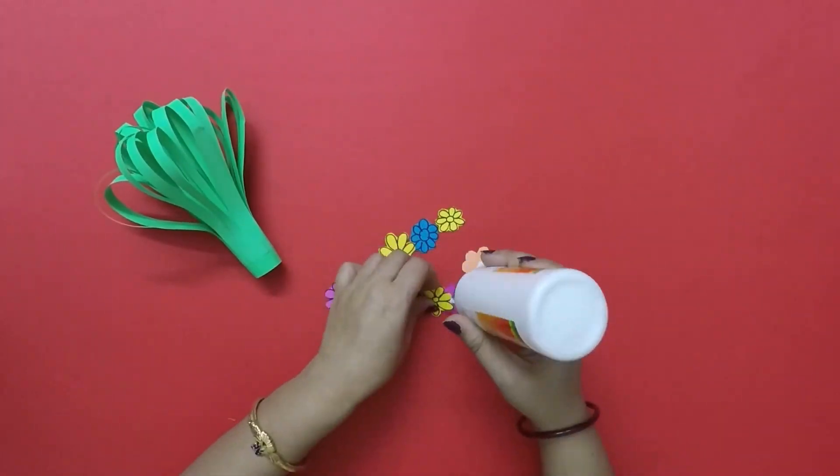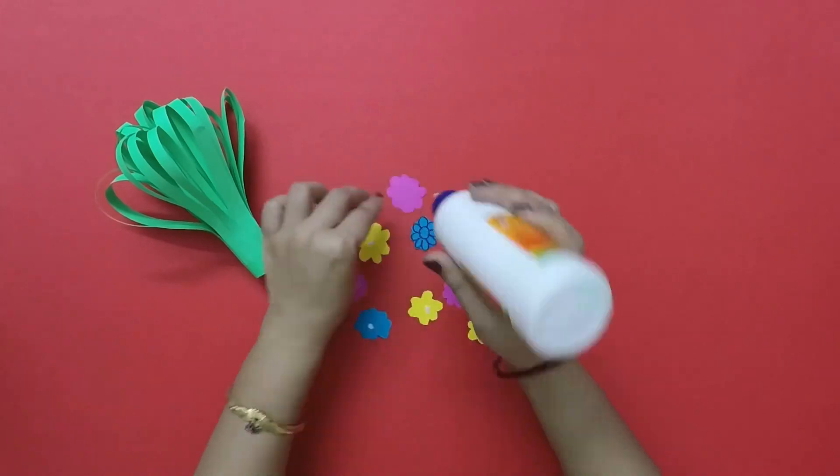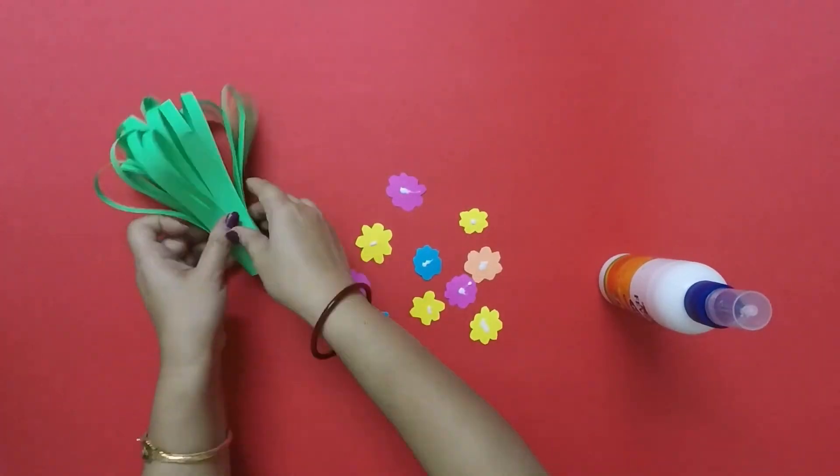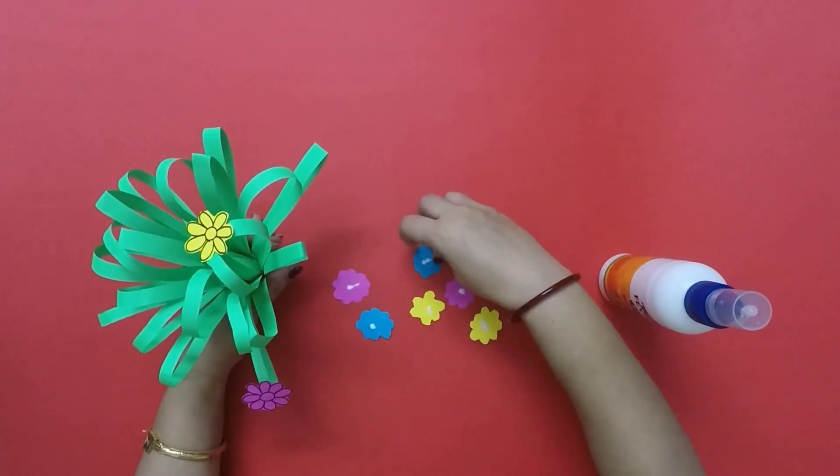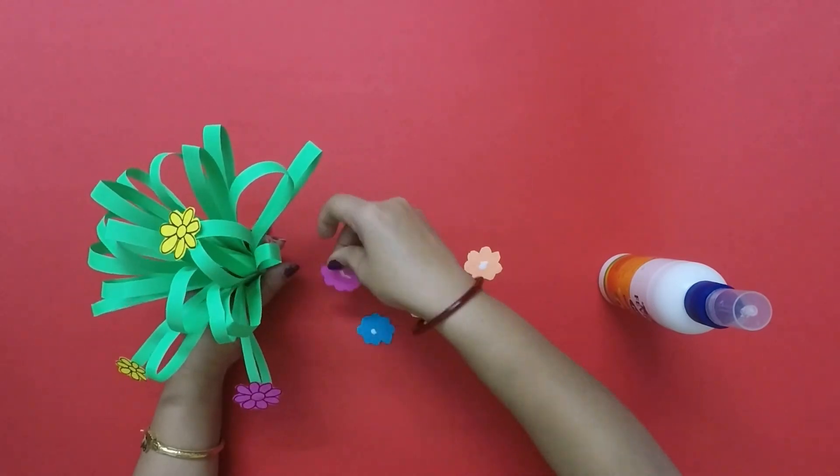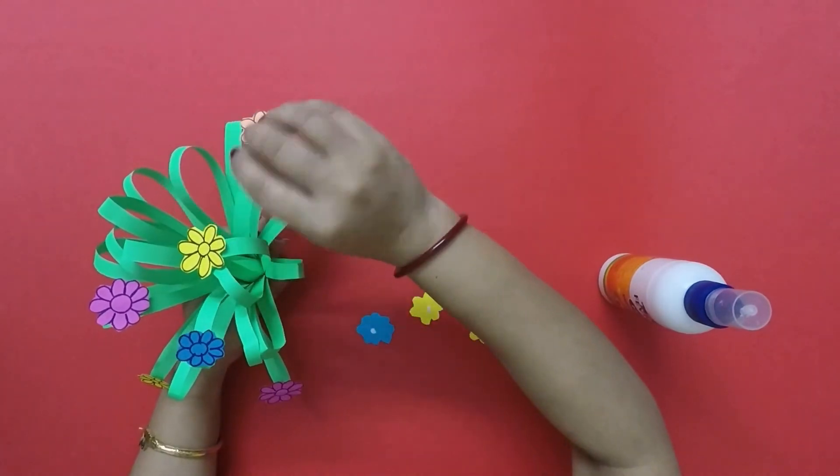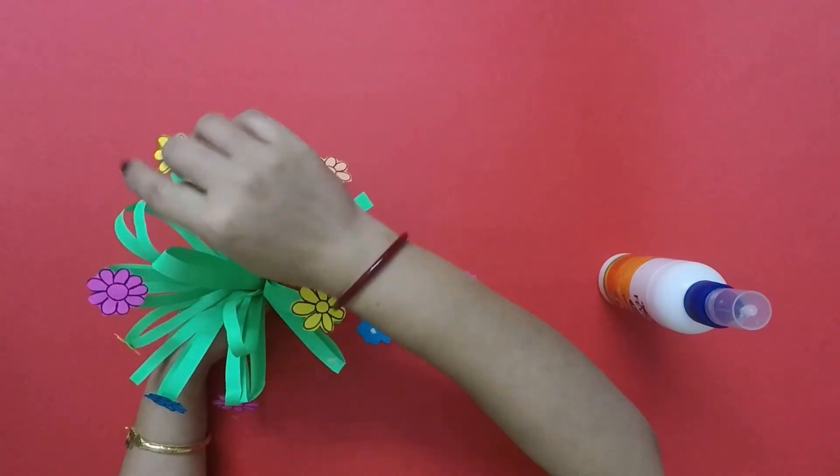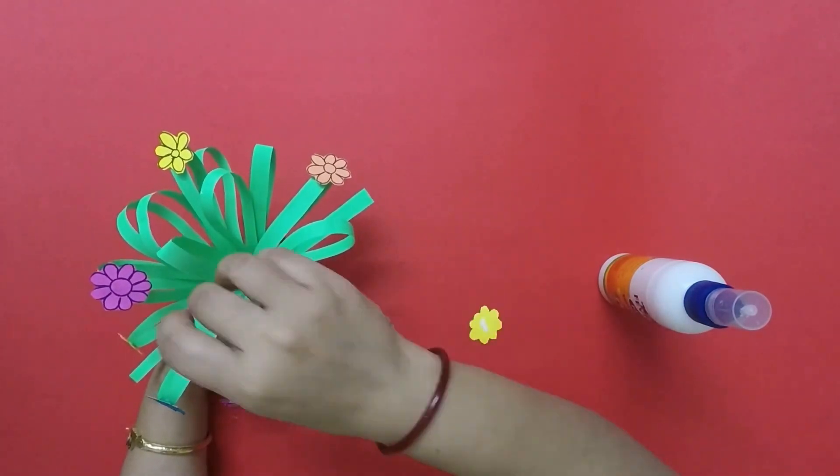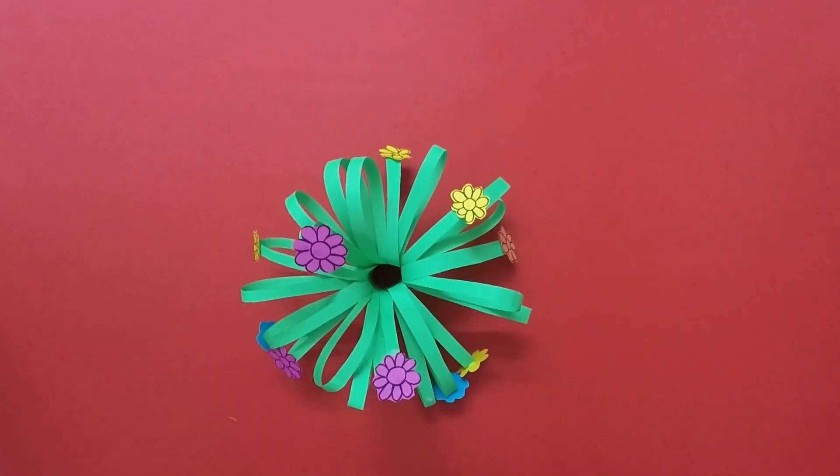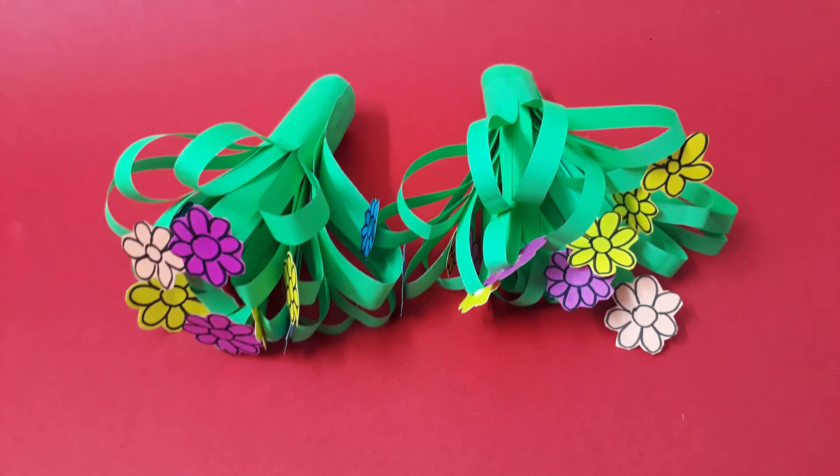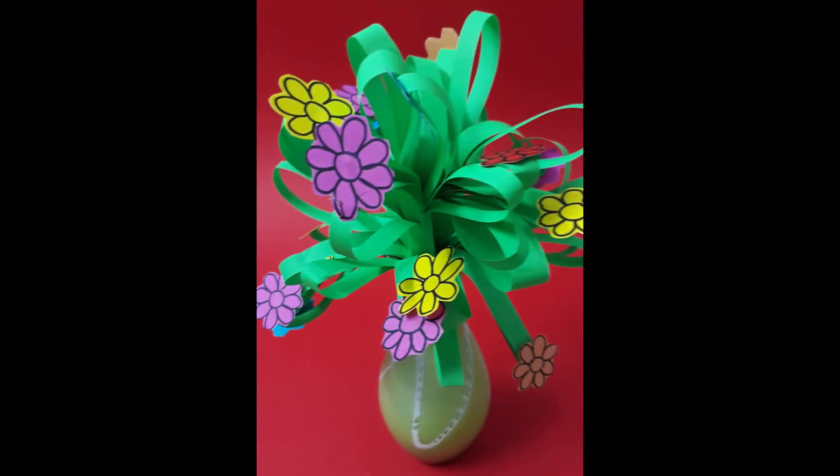Next, paste the flowers on the green color strips. This can be used as a bouquet and placed on flower vase also.